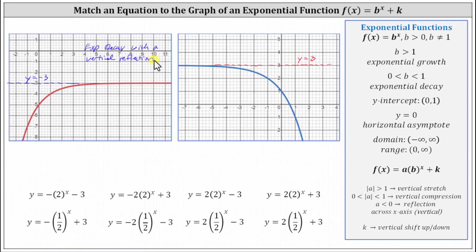Looking at the graph on the right, notice the horizontal asymptote is y equals three, indicating the graph has been shifted up three units. If we reflect this graph vertically, the shape resembles exponential growth — so the right graph is exponential growth with a vertical reflection.